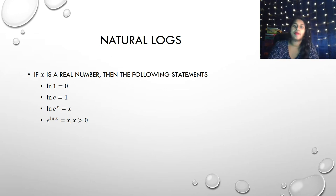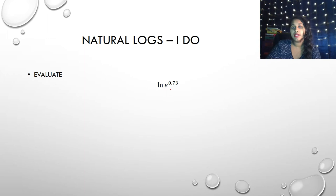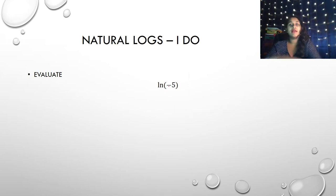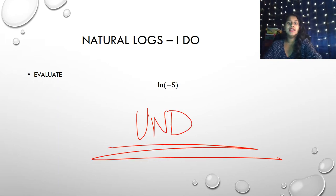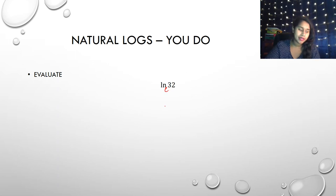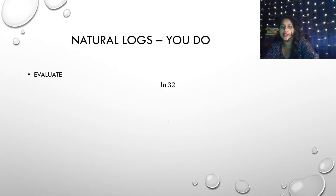Let's apply some logarithmic properties. For ln of e to the 0.73: knowing the natural base, everything crosses out and the answer is 0.73. For ln of negative 5: just as log of negative 5 was undefined, ln of negative 5 is also undefined — negative numbers in ln and logs never match up. For ln of 32, there's no simplification, so it's a calculator question. And for the next one, remember what the natural base of ln is.